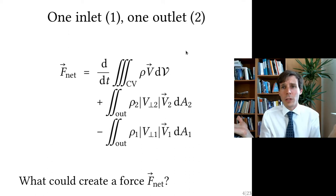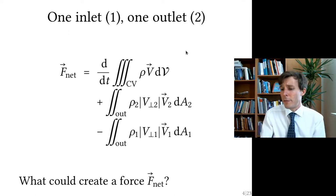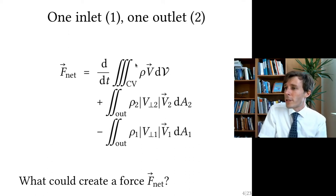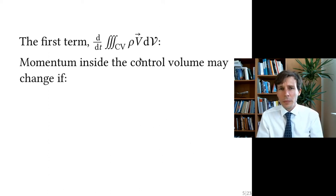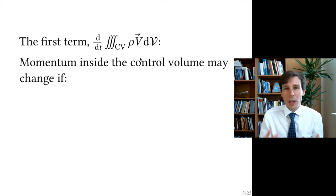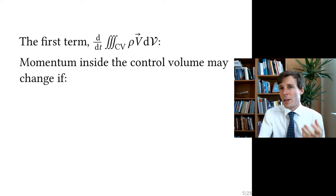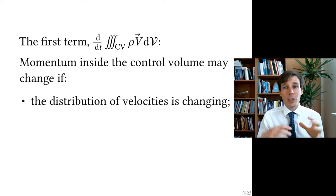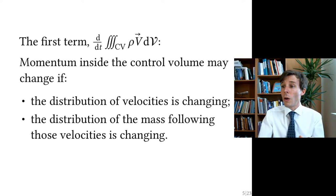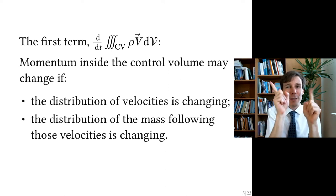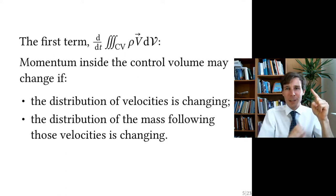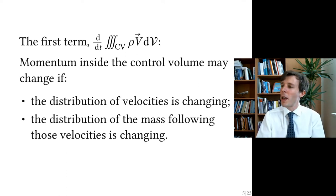What could create a net force? Let's look at the first term. This term is not zero if the momentum inside the control volume changes — and it changes if the distribution of velocities is changing, or if the distribution of mass following the velocity is changing. So if the velocity vectors are all the same but the density is not uniform, you would have a change in this term.